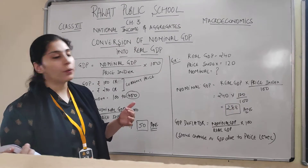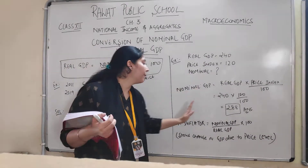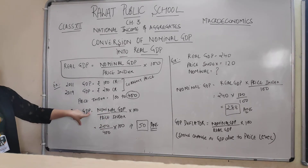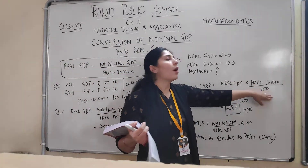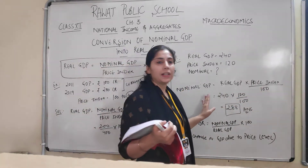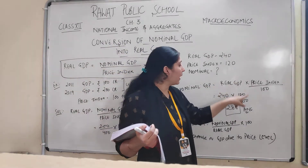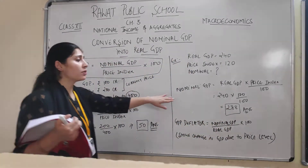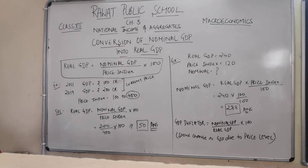In case a question comes where you are given real GDP and price index but need to find out nominal GDP, it is simple. Nominal GDP equals real GDP multiplied by price index divided by 100. So nominal GDP equals 240 into 120 divided by 100, which gives us 288 crores at current year prices. These are the basic numericals related to GDP in terms of nominal and real GDP.